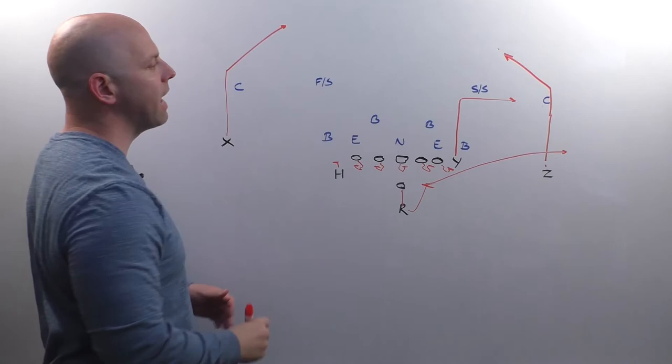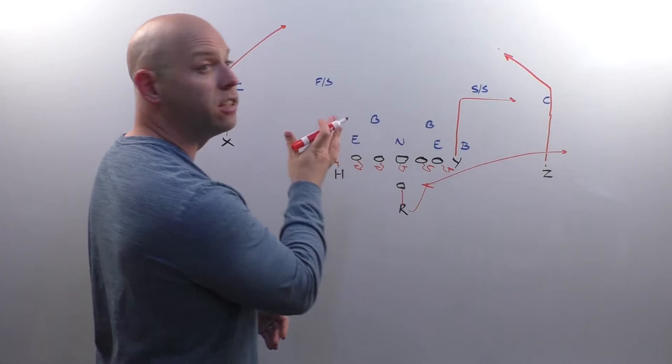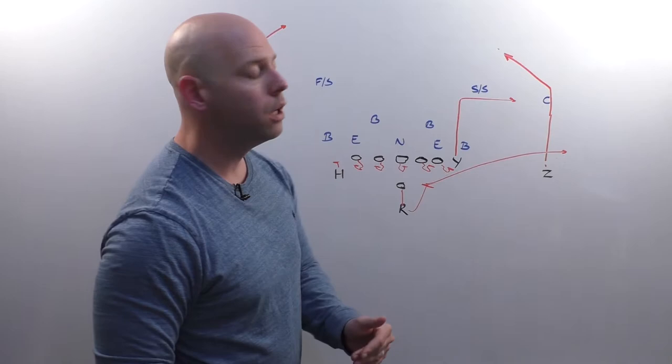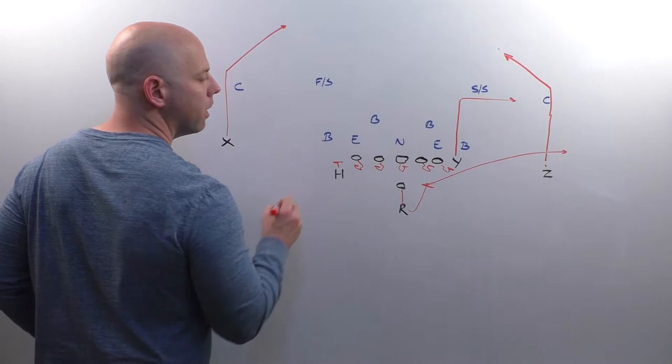Backside, same route. Okay, he's going to be getting seven steps. The only thing with the backside post is we don't want it to cross over the hash because we don't want two posts running into each other. So when he gets to the hash, he will skinny this up on the hash and take it there. He will not continue to run his post across the hash. So his rule is do not cross the hash.